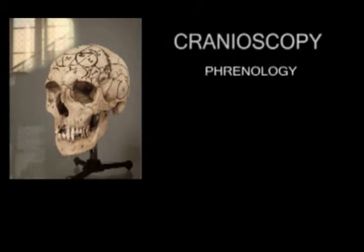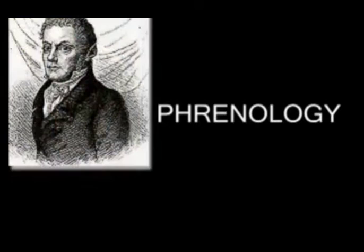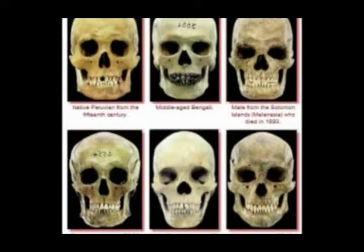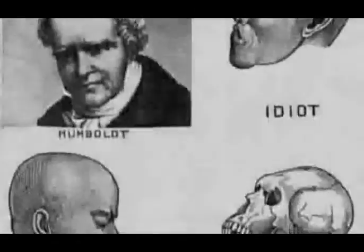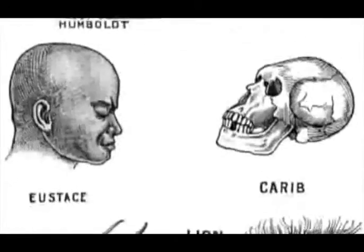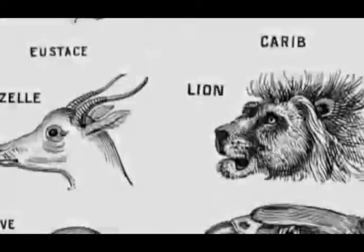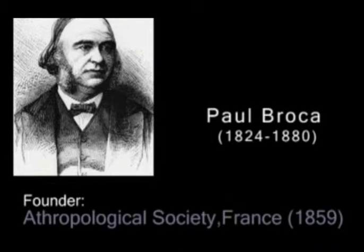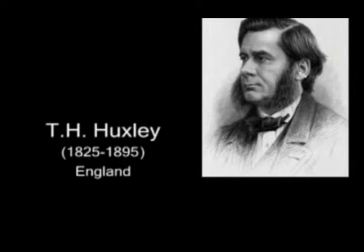Cranioscopy was later renamed craniology by his student Johan Spurzheim. In the 19th century, the number of notable contributors to the literature of craniometry quickly increased. Scientists and researchers who compared humans to other animals include Paul Broca, founder of the Anthropological Society in 1859 in France, and T. H. Huxley of England.